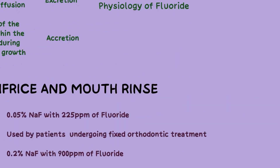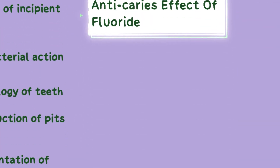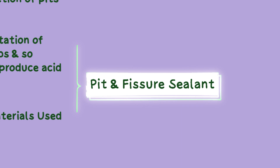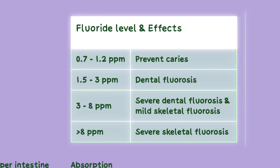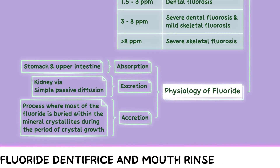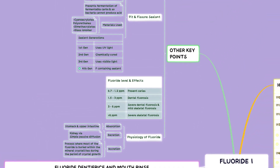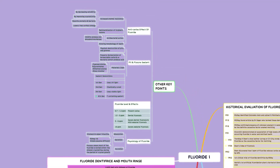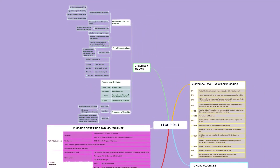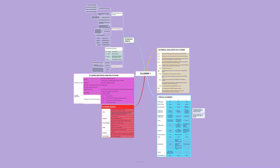You can go through additional points related to fluorides — such as the anti-caries effect of fluoride, pit and fissure sealants, effects of fluoride at different levels, and the physiology of fluoride in the body — in this section of the mind map. With this, we come to the end of this discussion on fluorides. Hopefully, we have helped you revise this topic quickly. You can now head on to the MCQs on our app and try to solve them. Happy Learning!